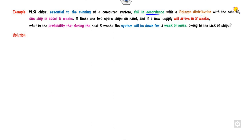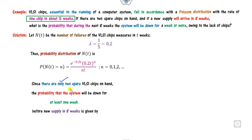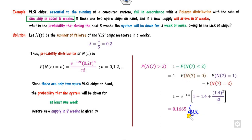Example 5: VLSI chips in a computer system fail according to a Poisson process at a rate of 1 chip per 5 weeks, so lambda = 1/5. If two chips are on hand and new supply arrives in 8 weeks, find the probability the system will be down for a week or more. Since there are only two spare parts, write P(N(8) > 2) = 1 - P(N(8) ≤ 2), substitute and calculate the answer.